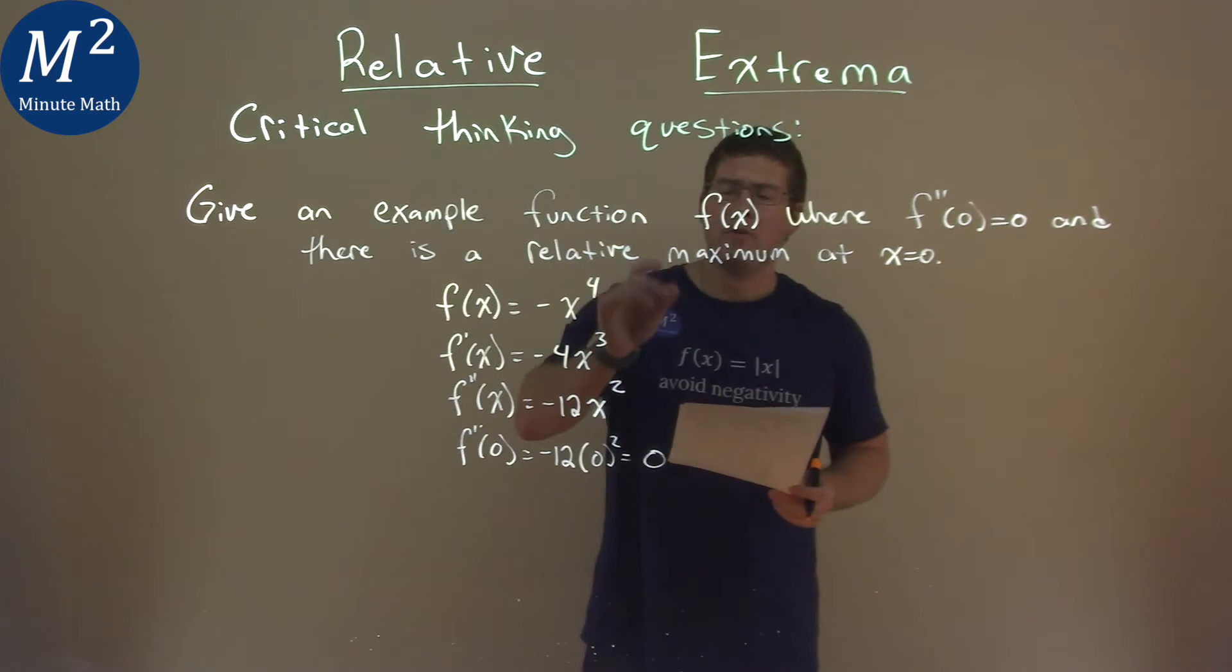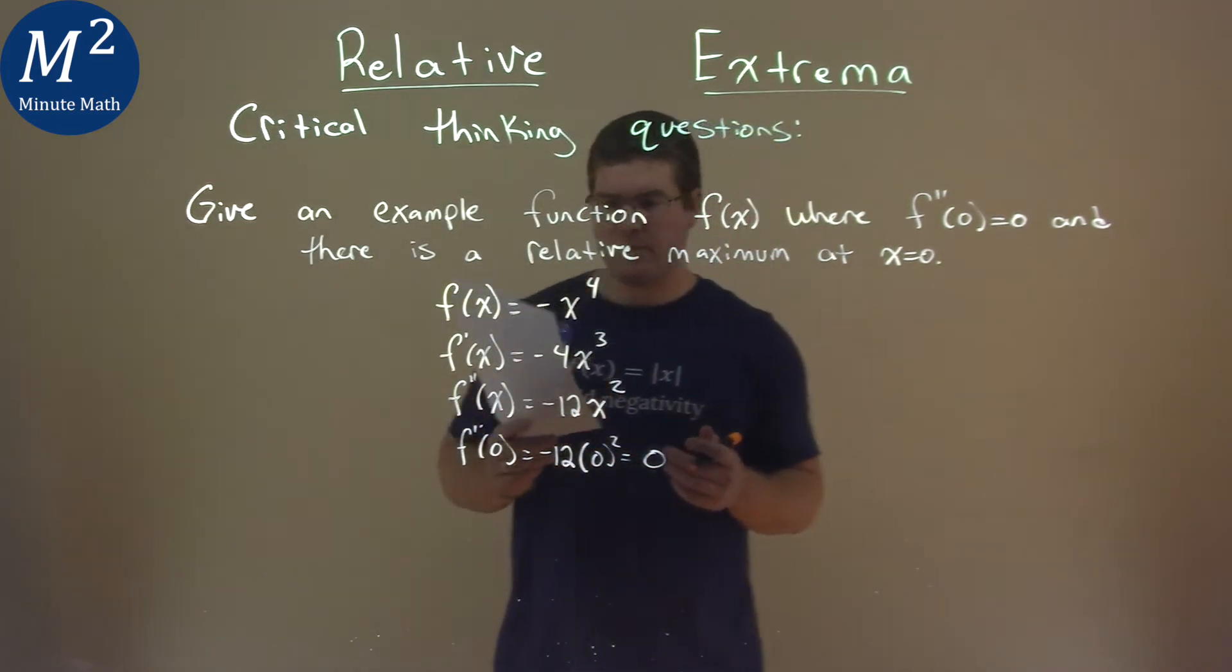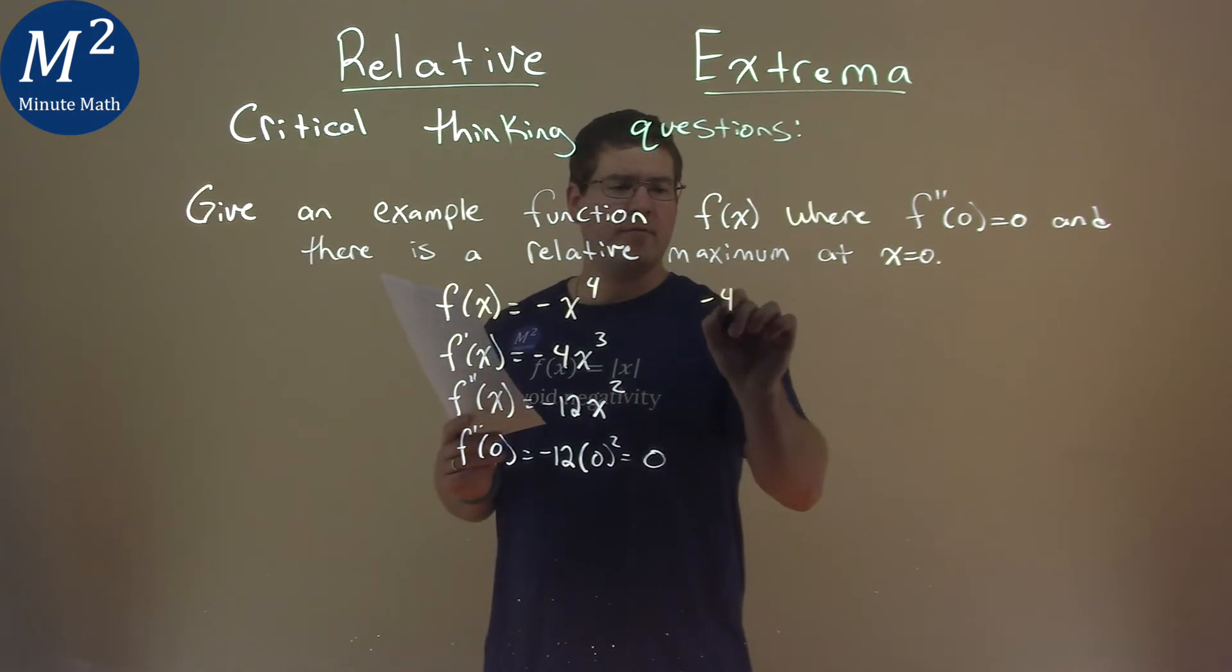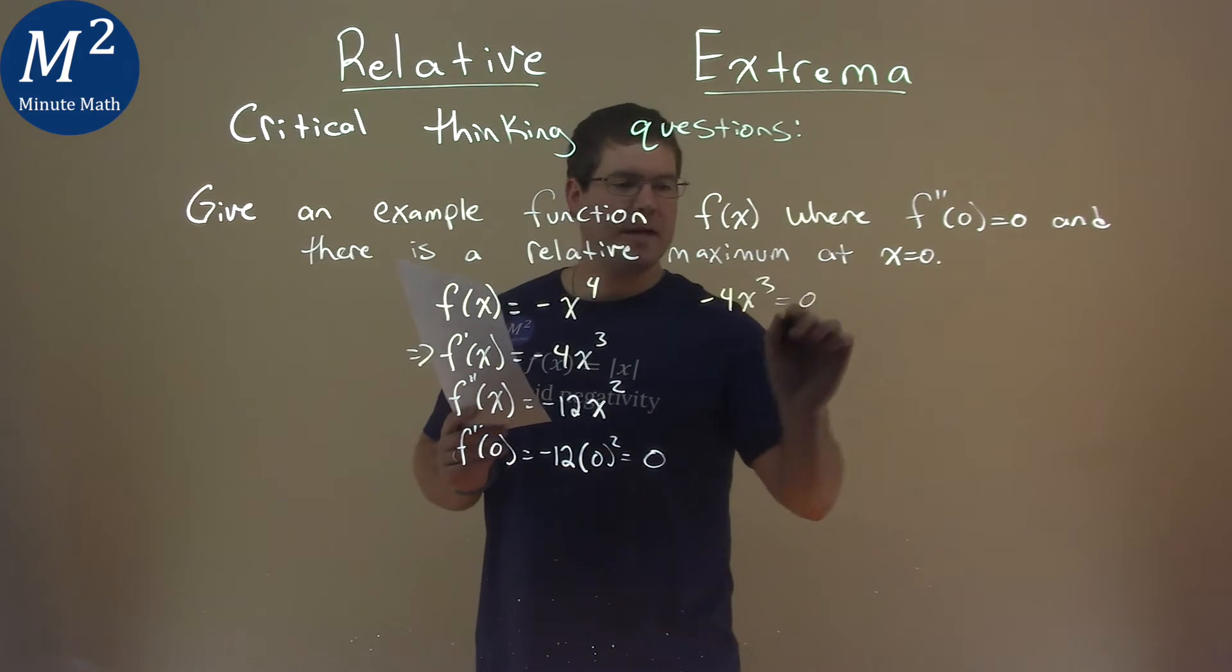Now, we want to also ensure we have a relative maximum at x = 0, so let's do our first derivative test. We take our derivative, -4x^3 right here, and let's set it equal to zero and solve.